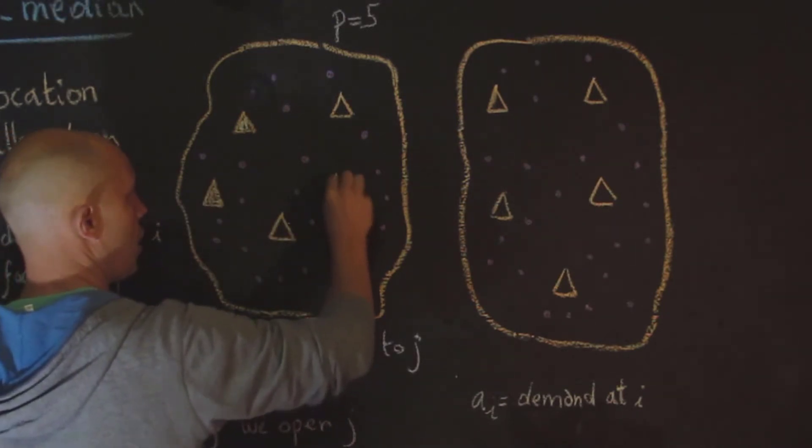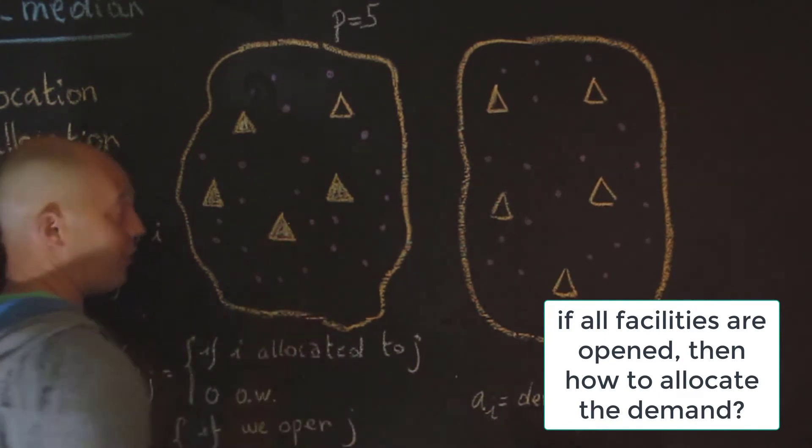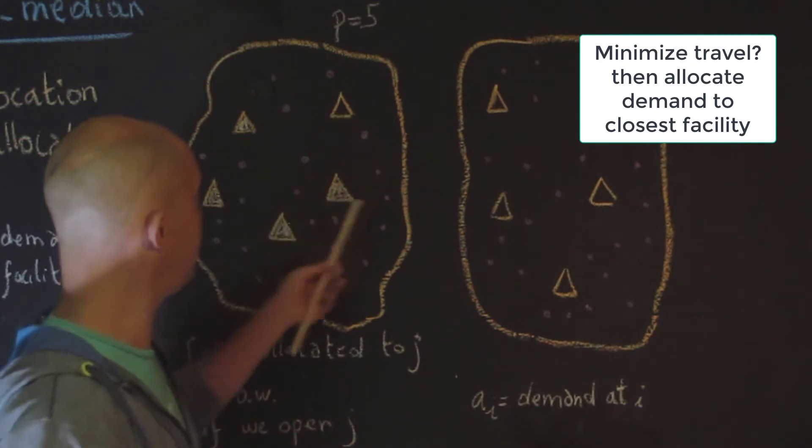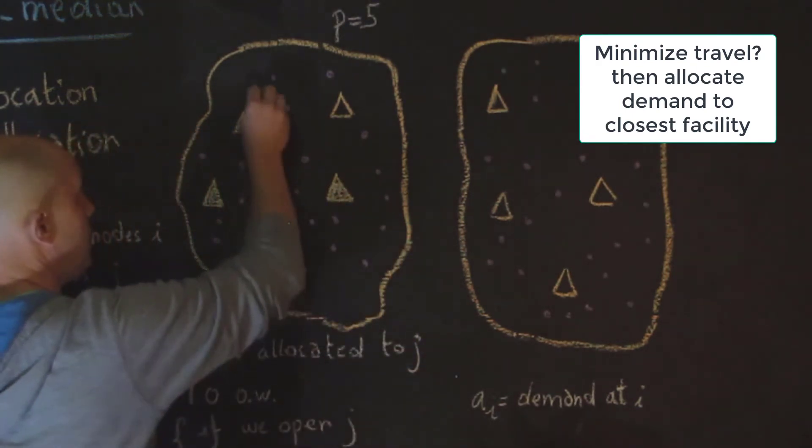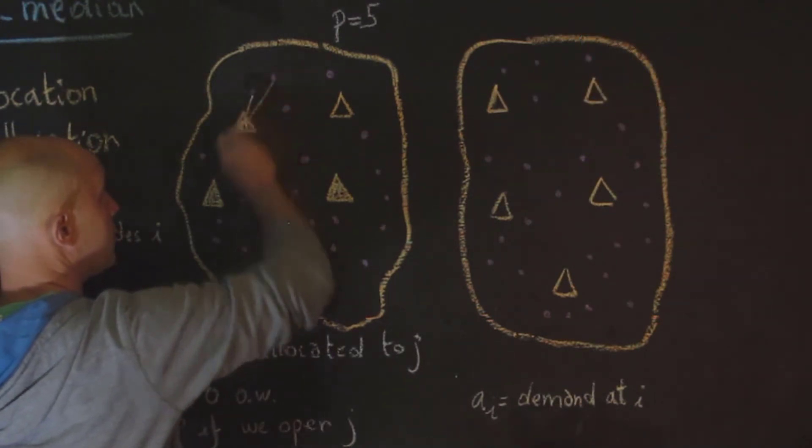And then the next question would be, how should the demand be allocated? Well, the main objective of the P-Median is to minimize the distance for the travel. Now, assuming here that the travel is sort of circular or Euclidean, what you can do is then assign each demand node or demand unit to its closest facility.